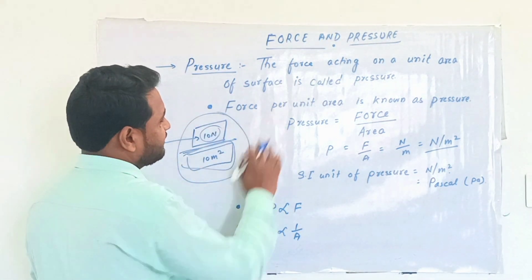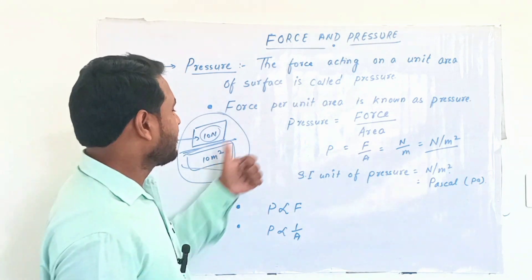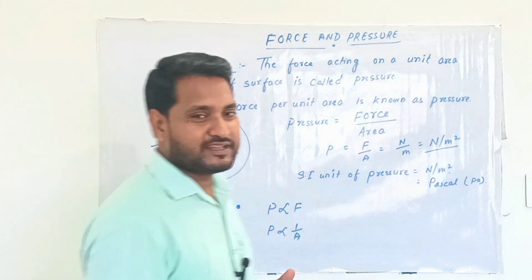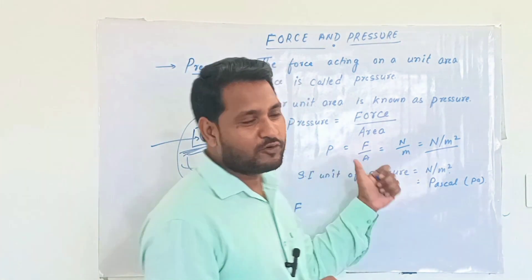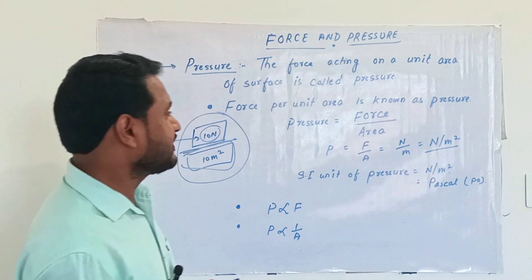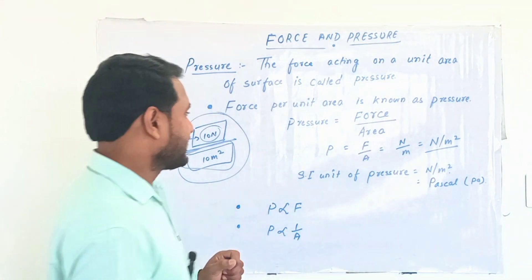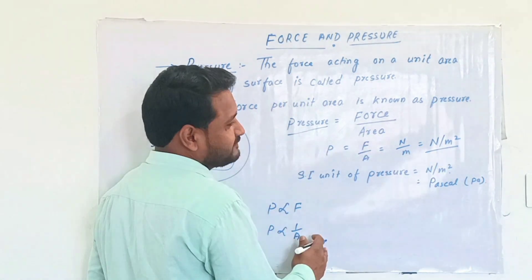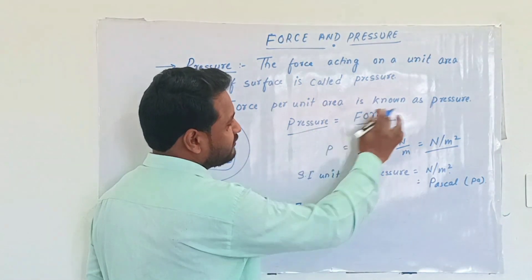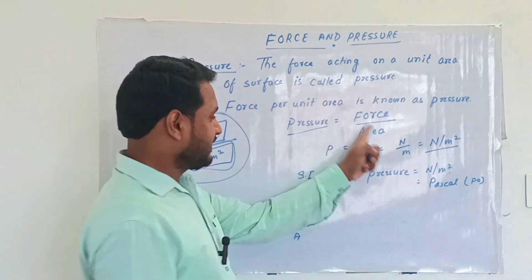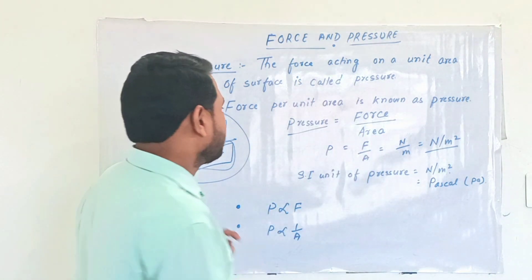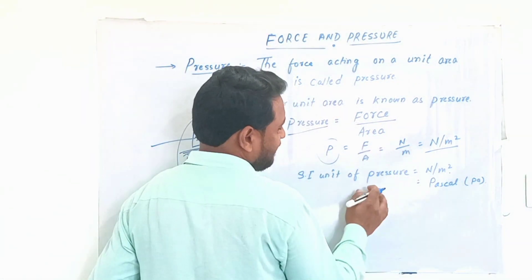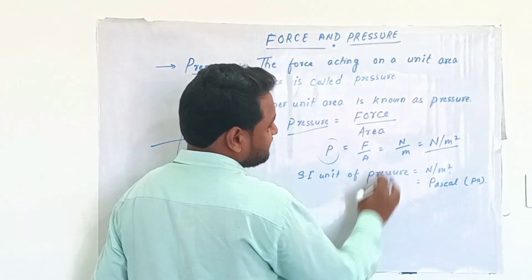In other words, we can say that force per unit area is known as pressure. Force per unit area is known as pressure. Pressure is equal to force divided by area. Pressure is denoted by P. P equals F divided by A.